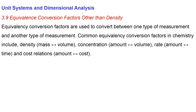We've covered all the major types of equivalency conversion factors: density (mass and volume), concentration, rates of change (amount per time), and cost relationships (amount per dollar). This covers essentially every kind of conversion factor we're ever likely to encounter.